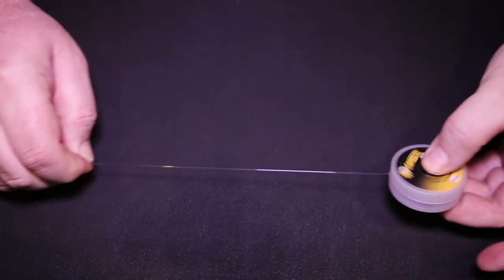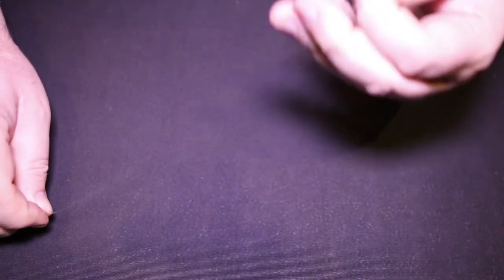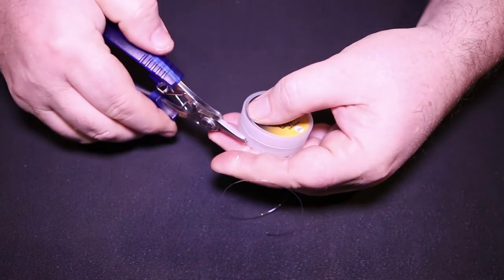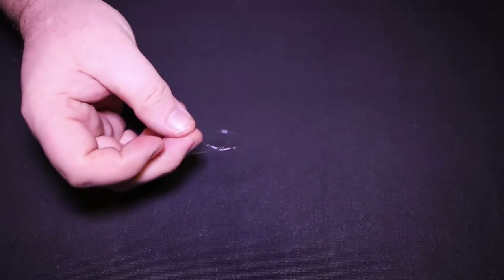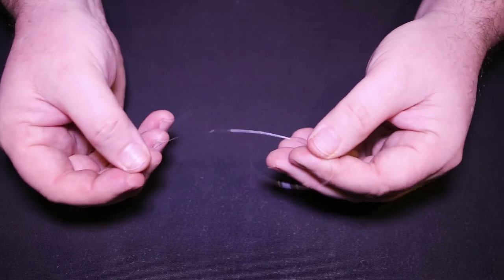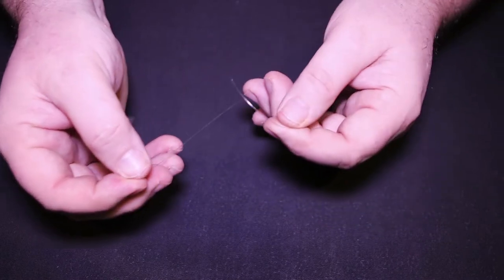Alright guys, let's run you through this rig. You're looking to take eight or ten inches of stiff filament—make sure it is stiff filament. Just snip that off there and try and bring your two ends together.